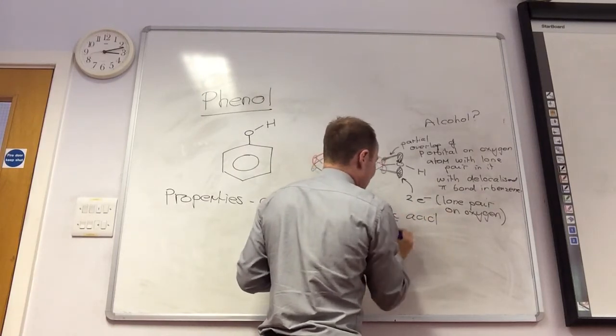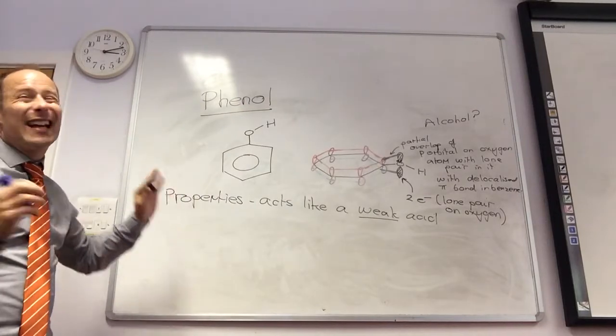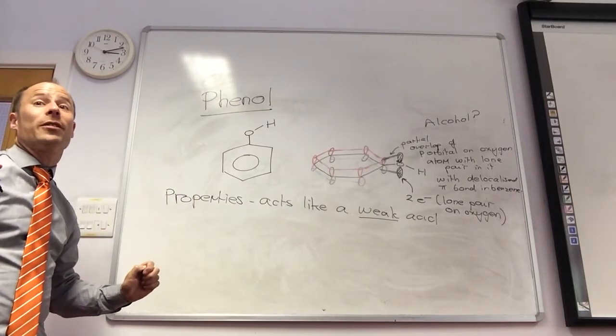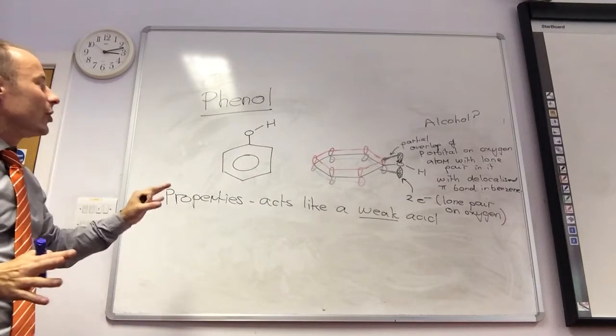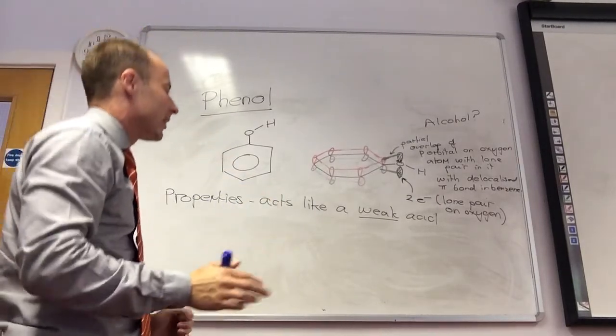Is that because it can only donate one H plus? Not so much, as HCl can only donate one H plus but it's a very strong acid. It's to do with the fact it's an organic acid. Organic acids are weak acids. We'll look at that in the next part of the talk.